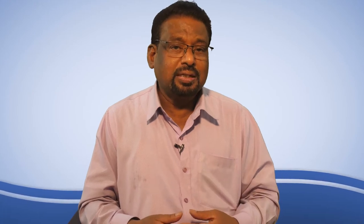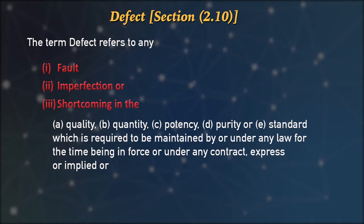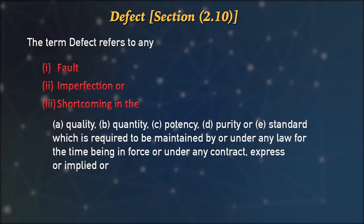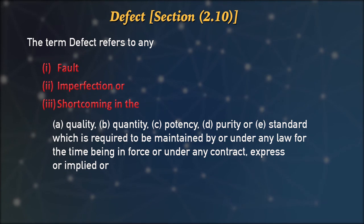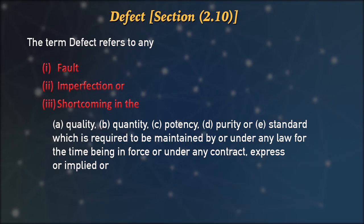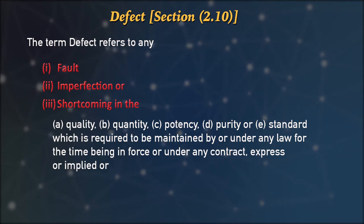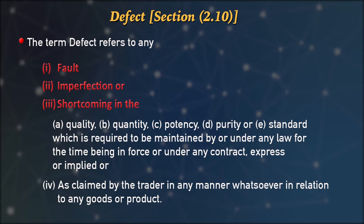The next important term is 'defect in goods.' The term 'defect' refers to any fault, imperfection, or shortcoming in the goods purchased — in the quality, quantity, potency, purity, or standard which is required to be maintained by or under the law for the time being in force, or under any contract either by express or implied terms. The defect may also include as claimed by the trader in any manner whatsoever in any goods or product.